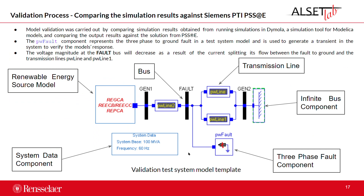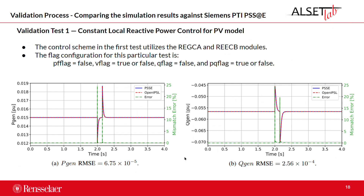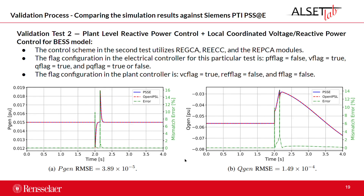The validation process was done through a test case system model template, where we apply a fault to the system and measure on both PSSC and Dymola the resulting active and reactive power injected by the renewable energy source. The active and reactive power for test one — a PV model with constant local reactive power control — had similar results, with a spike in the mismatch area only at the moment of the fault and the clearing moment. This is due to the difference in solver tolerance between Dymola and PSSC. Test two, for the battery energy storage system with local voltage and reactive power control, also had the same agreement.